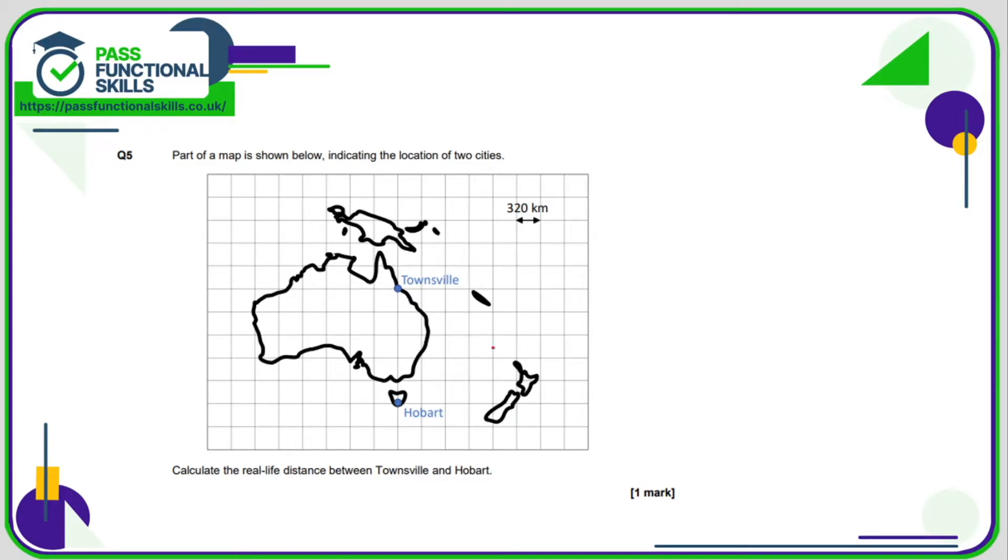Question number 5, we can see that each square is 320 kilometers long. So 1, 2, 3, 4, 5. So we need to do 5 times 320. We can use a calculator, that comes to 1,600 kilometers.